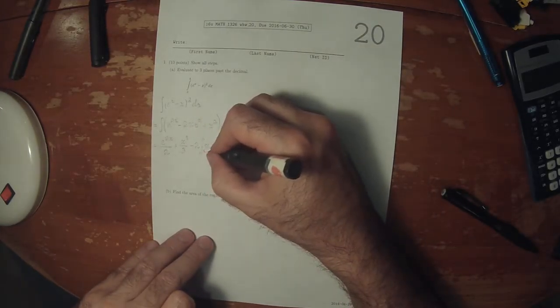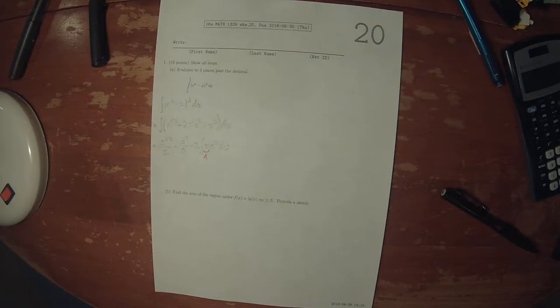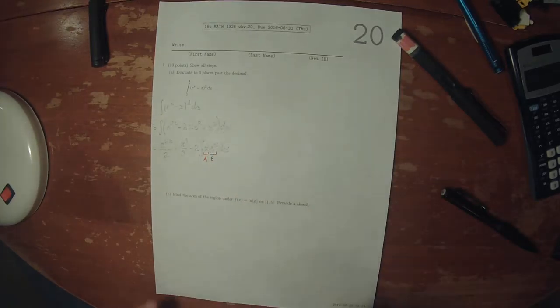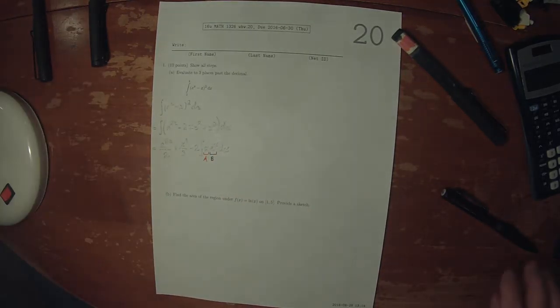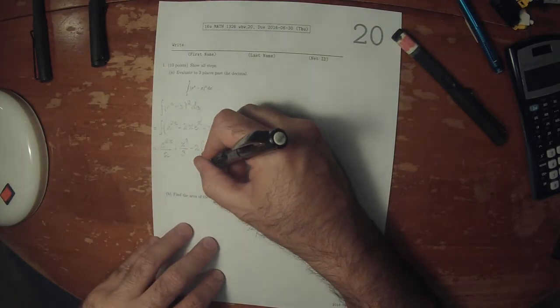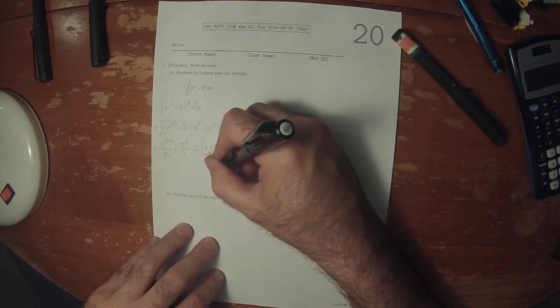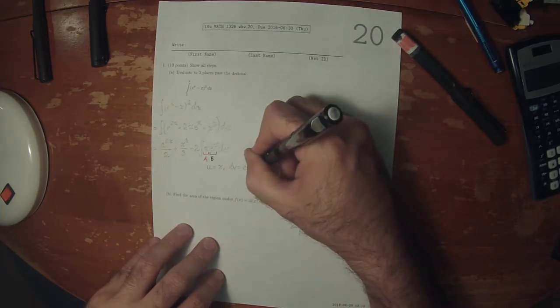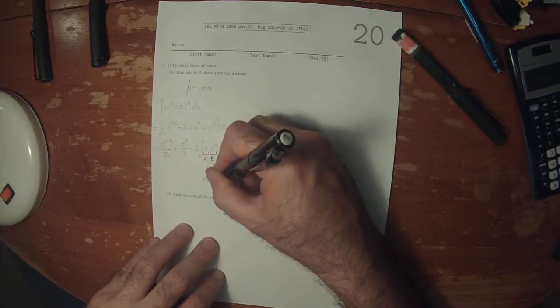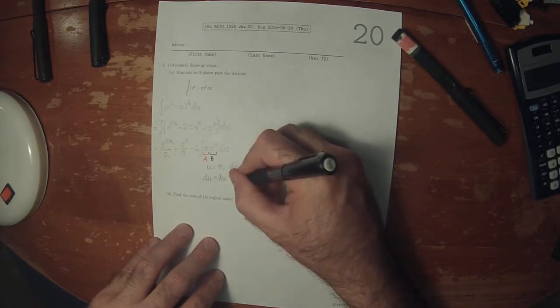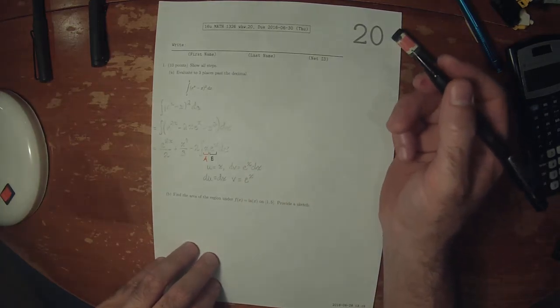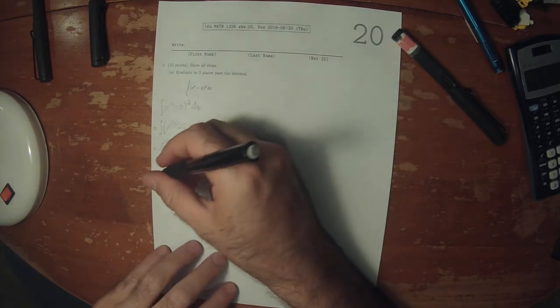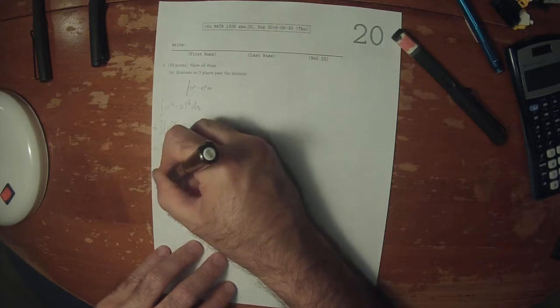This is an algebraic factor and this is an exponential factor, so that informs us about our choice for u. So u is x, dv is then everything else. Du is dx, v is e to x. So that means that this will be just copying those terms from above: e to 2x over 2.